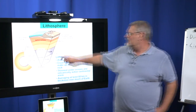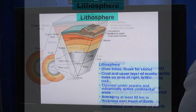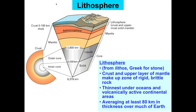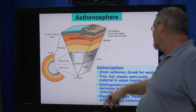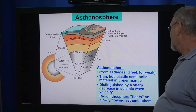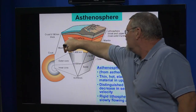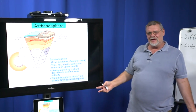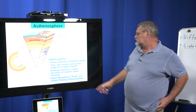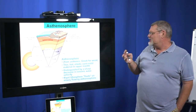The lithosphere is thinner under the oceans and thicker under the continents. It averages about 80 kilometers in thickness over much of the Earth — we've never dug that deep, nowhere near 80 kilometers. Next comes the asthenosphere, coming from the Greek for 'weak.' It's a thin, hot, elastic, semi-solid material in the upper part of the mantle. We're still in the mantle here, and underneath the upper part is what we call the asthenosphere — it's essentially identified by the fact that it flows. It's semi-plastic; it can flow, push, and move. The lithosphere rides on top of this semi-liquid, semi-elastic asthenosphere.